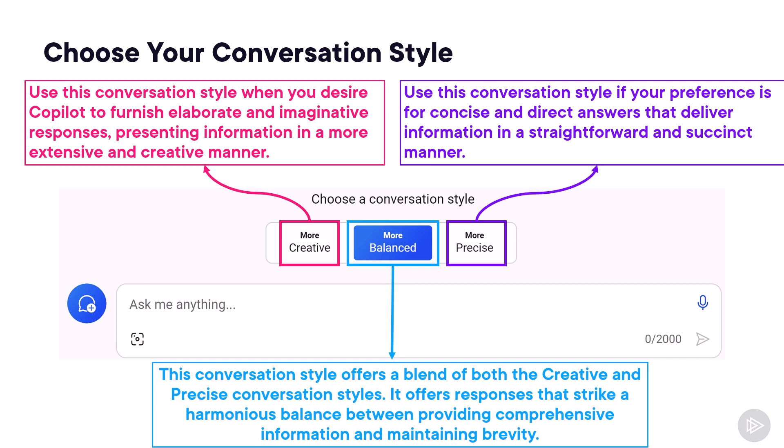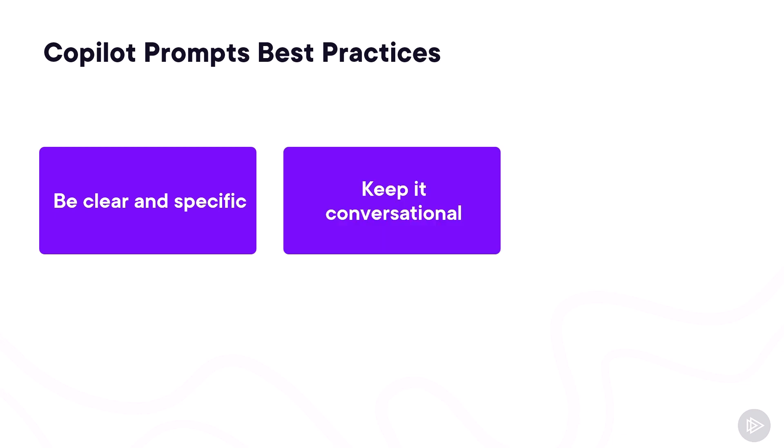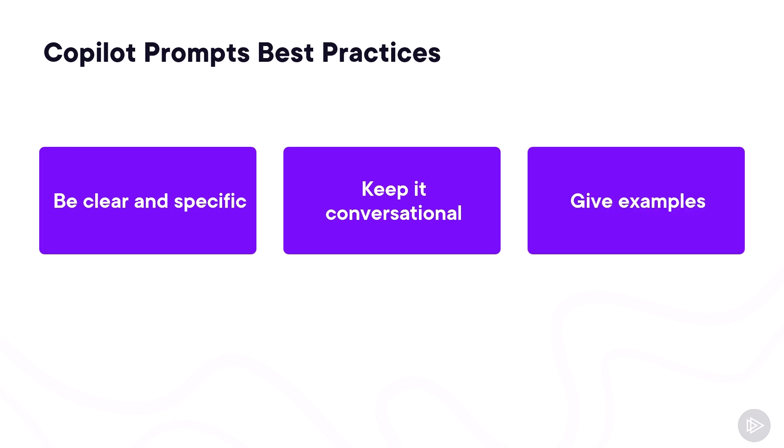Before we finish off, I also wanted to share some best practices when talking to Copilot. First of all, be clear and specific — provide specific instructions to Copilot such as the topic, purpose, tone, and required length. Remember, it's a conversational chatbot, so you can give feedback to Copilot based on the quality of its responses to help the AI learn and generate a new version that matches your preferences, and you're not paying for each interaction, so feel free to ask Copilot to reiterate. Don't hesitate to give examples and use clear and specific keywords or phrases when asking Copilot to write text for you, as this helps it generate more relevant results.